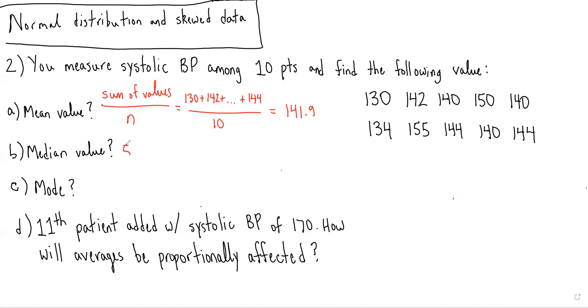We're then asked to calculate the median value, which we remember is the 50th percentile value. To do this, you have to first order the data. So if we look at this data, we'd say 130 is the smallest and then 134 and then 140, 142, then 144, then 150, and then 155. If you have an odd number of values, then it'll be the value that falls right in the middle.